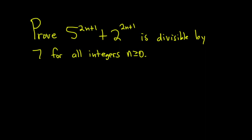Hello. In this problem we're going to prove that 5 to the 2n plus 1 plus 2 to the 2n plus 1 is divisible by 7 for all integers n greater than or equal to 0. And we're going to do this using the principle of mathematical induction. So, proof.